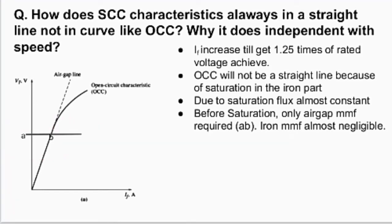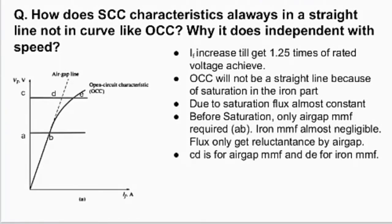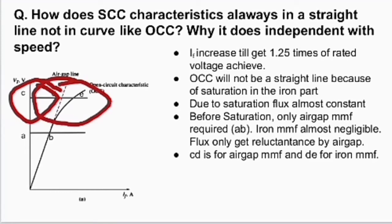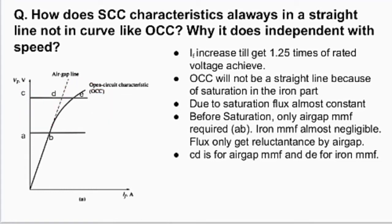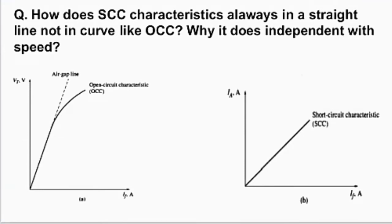After saturation, we have line CDE: CD is called the air gap MMF and DE is called the iron MMF. CD is the field current required for air gap MMF, and DE is the field current required for iron MMF. DE is the extra field current through which no flux is produced — it only compensates the iron MMF. Whatever extra field current we give, it only compensates the iron MMF.